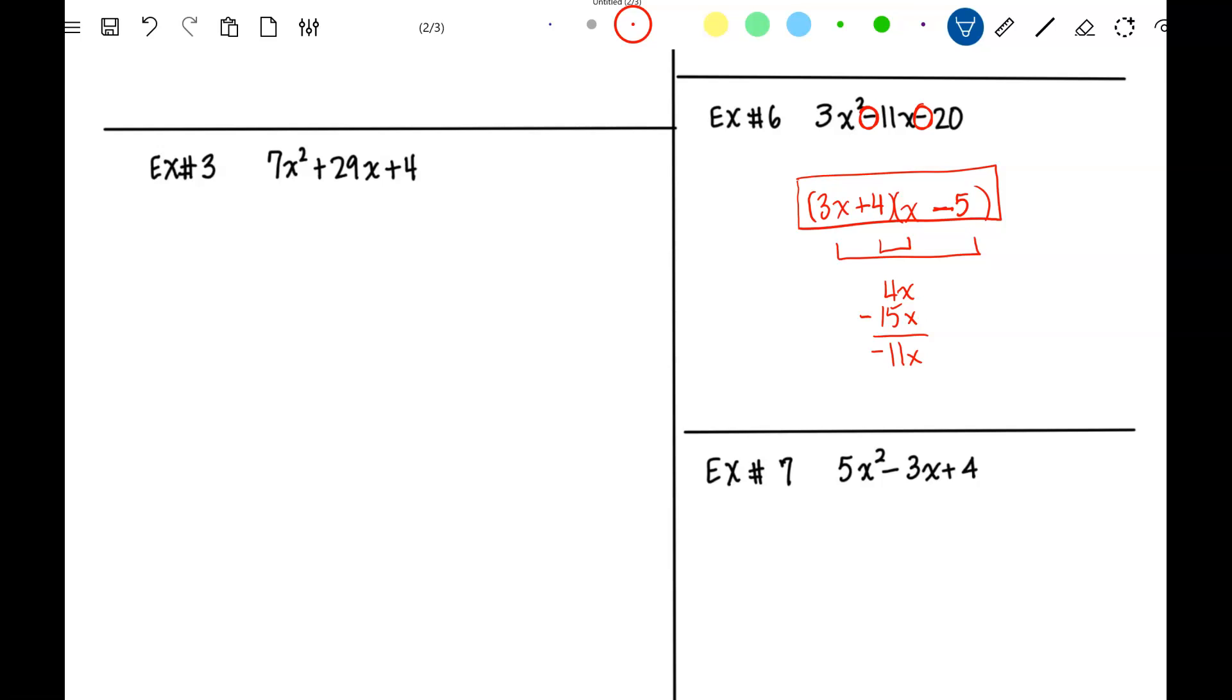Now this last one, no matter how many ways you do 5x squared and 4, you will not be able to factor it. So it is prime. If it is not factorable, it is called prime. That means the only way you could write it as a multiplication problem is 1 times 5x squared minus 3x plus 4.